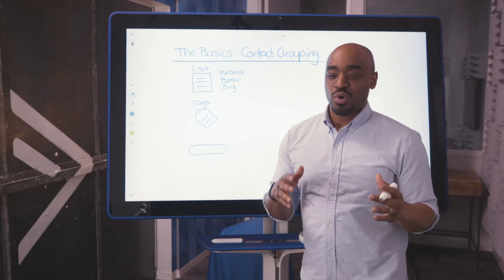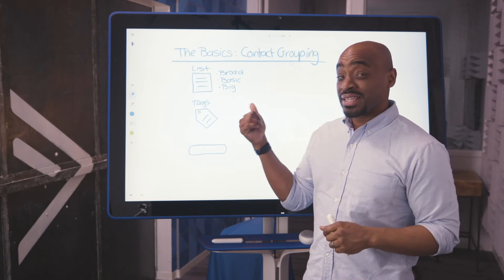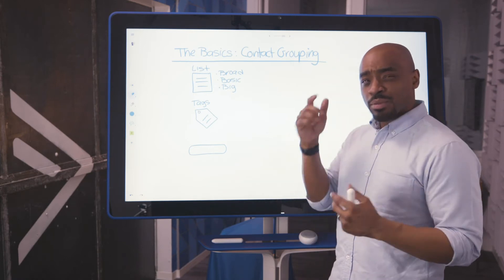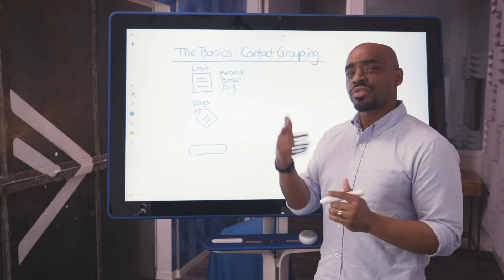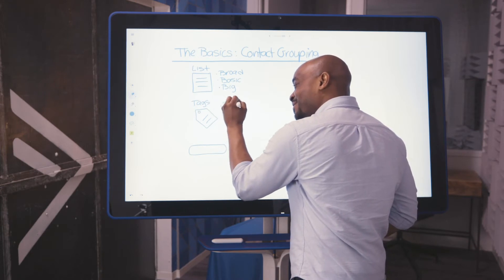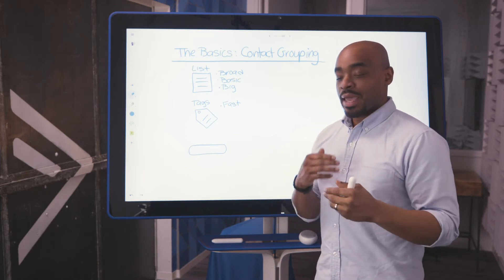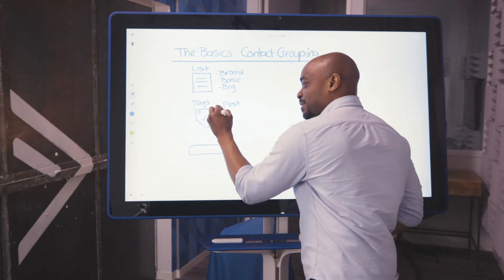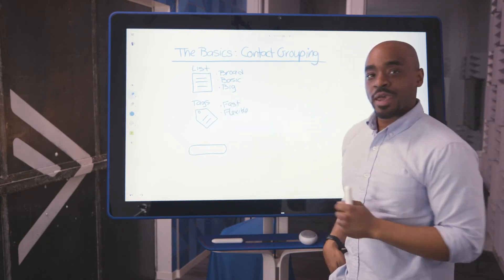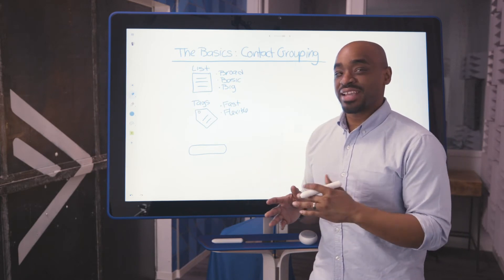Now, when we talk about tags, we're going from the known to a little bit of the unknown land. While you may have been familiar with lists, you may not be that familiar with tags. So I've got three words for tags as well to help you memorize exactly how to approach them so you can start thinking about how to use them in your business. The first one is fast. Tags are fast. They can be quickly applied and they can be quickly removed. And given that functionality, that makes them very flexible.